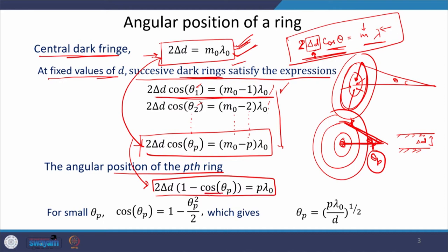In this relation, θ_p appears within a cosine term. For small θ, the cosine can be expanded, keeping the first two terms. Substituting this expansion back into the previous expression gives the angular position of the p-th ring θ_p. From there we can also get the angular positions of the (p−1)-th and (p+1)-th rings, calculate the angular width, and then the physical width of the ring — similar to what was done in Young's double slit and Newton's ring experiments.